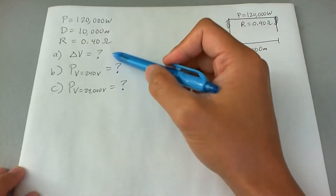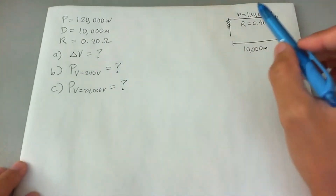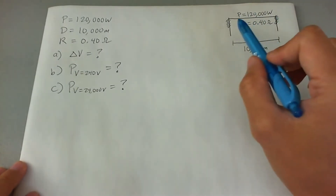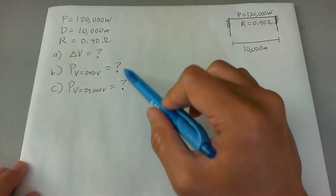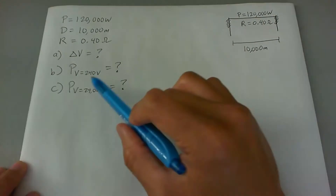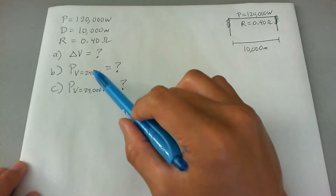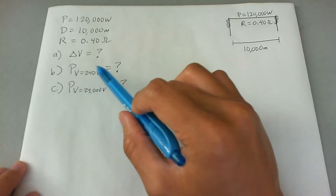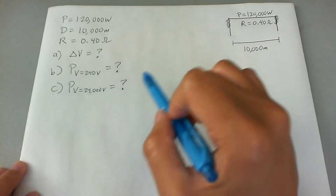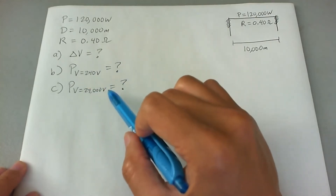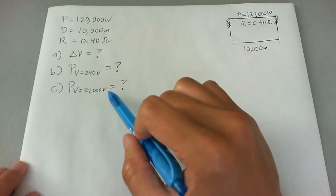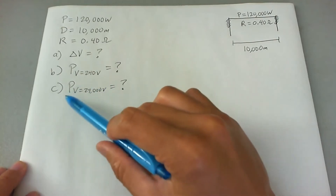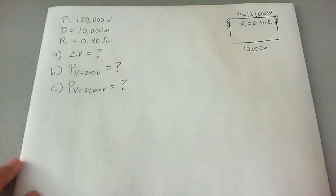The first question is: what's the voltage drop across the wire given these parameters? The second question is: if there was a voltage drop of 240 volts, how much power loss will there be? And the third question is: if there's a voltage drop of 24,000 volts, what's the power loss?